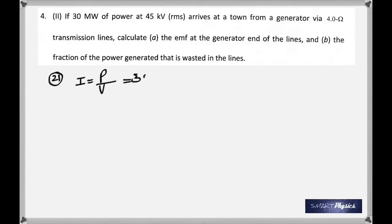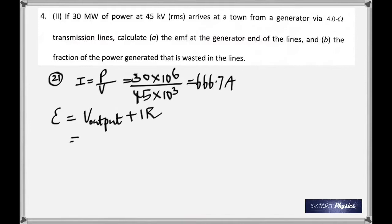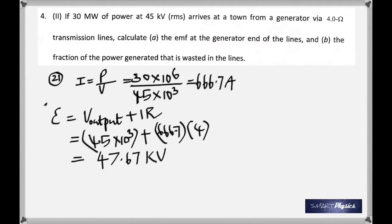So when we keep the current low, the heat generated is really low. In this question, first let's find the current. Current is power by voltage. Power is 30 megawatts, that's why you have the 10 to the 6, and 45 kV, so 10 to the 3. Get the current as 666.7 amperes. The EMF is going to be the output voltage plus I times R. The output voltage is 45 kV, and I times R—because R is 4 ohms, the resistance of the transmission lines—so we get 47.67 kV.